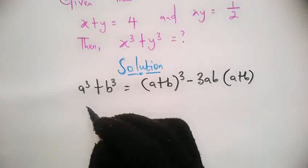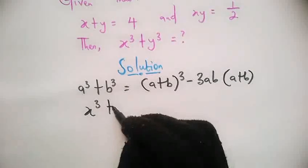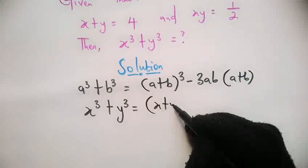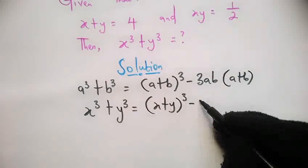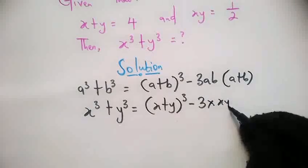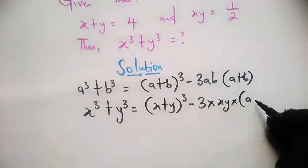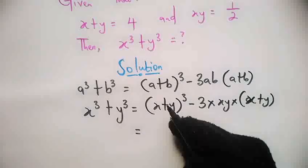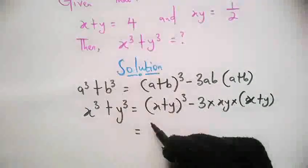we have x³ + y³ = (x + y)³ - 3xy(x + y). So this equals, from the given equation, x + y is 4.